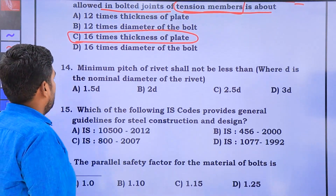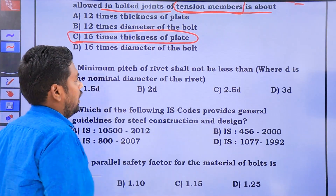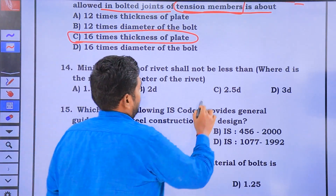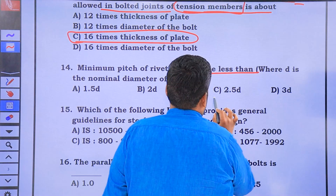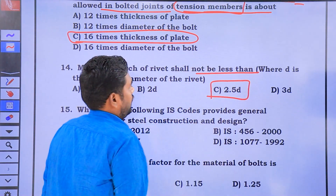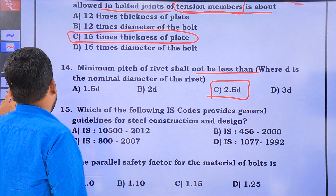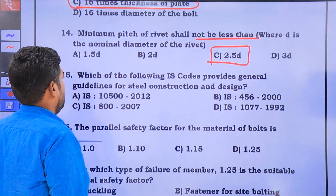The minimum pitch of a rivet shall not be less than 2.5D. This applies for both compression and tension members.